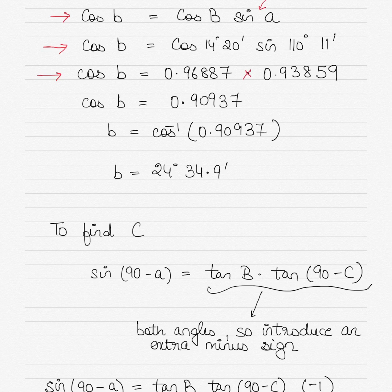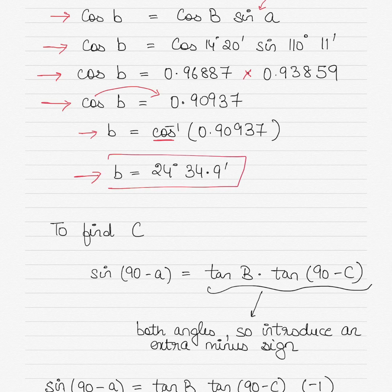Multiply the two values, following the working shown. Take cos to the other side as cos inverse and find the value of B, which gives you B equals 24 degrees 34.9 minutes. Some may get 34.8 depending on the number of decimal places used.